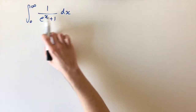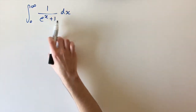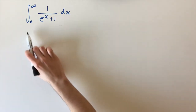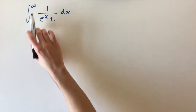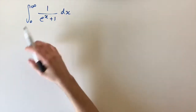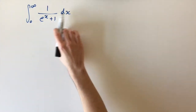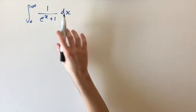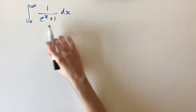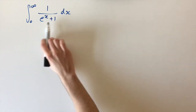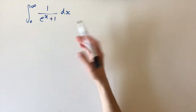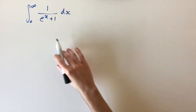Today we're looking at the integral of 1 over e to the x plus 1, with limits 0 and infinity. The limits are going to be the hardest part of this problem. There are a few ways to tackle this — we could use a substitution, for example, but that would lead to a slightly messy answer using partial fractions.